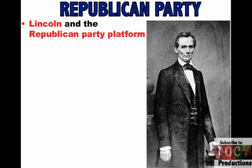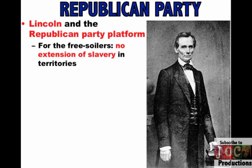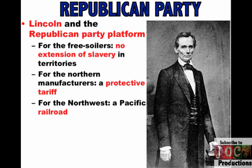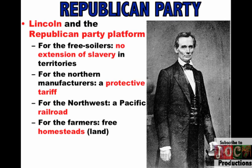So the Democrats are a mess. The Republican Party picks Lincoln as their nominee. The Republican platform has a little bit for everybody in the North: for the Free Soilers, no extension of slavery in the territories; for Northern manufacturers, a protective tariff; for the Northwest, a transcontinental railroad; and for the farmers, free land and homesteads. There's also another party running called the Constitutional Union Party with John Bell, who basically tries to avoid the issue of slavery — their position is to simply enforce the Constitution and the laws of the nation.